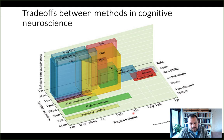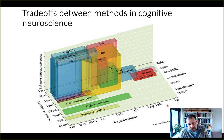Then we have some slower methods such as drug manipulations and PET — pharmacological studies and positron emission tomography — as well as lesion studies that play out over a few hours or minutes, up until, in lesion studies particularly, changes in the brain based on neuroplasticity over weeks up to a year.